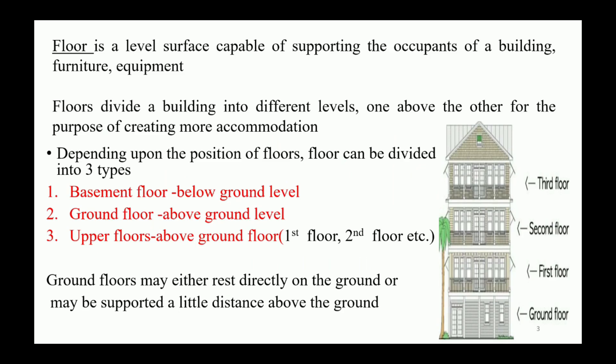Basement floor is just below the ground level and ground floor is just above the ground surface. They may directly rest on ground or may be supported a little distance above the ground level. Upper floors lie above the ground floor level, and based on position they can be named as first floor, second floor, etc.